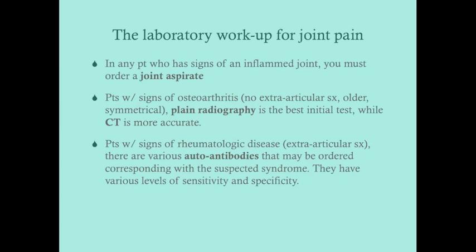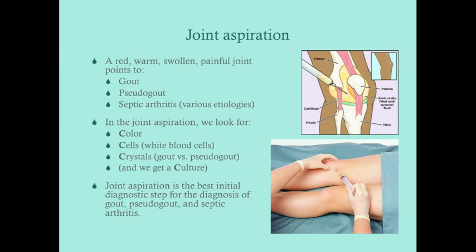A red, warm, swollen, painful joint points toward gout, pseudogout, septic arthritis, or rheumatoid arthritis. Anytime you have that presentation, joint aspiration is the first step. In the aspirate, look for color, cells, crystals, and send a culture. Joint aspiration is the best initial diagnostic step in the diagnosis of gout, pseudogout, and septic arthritis.